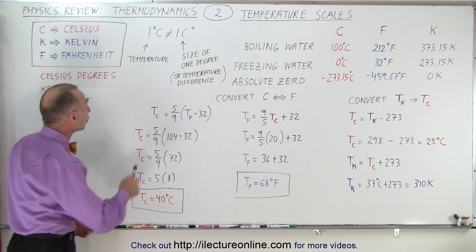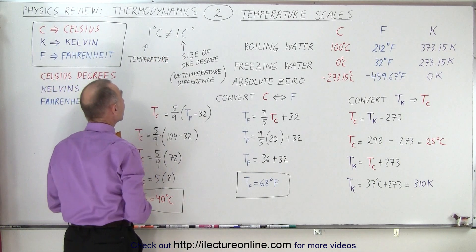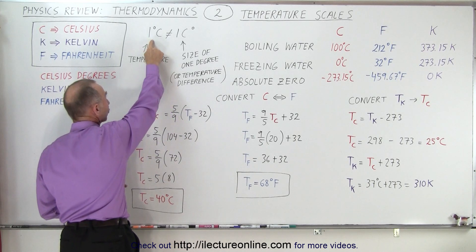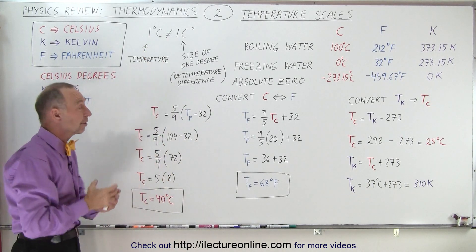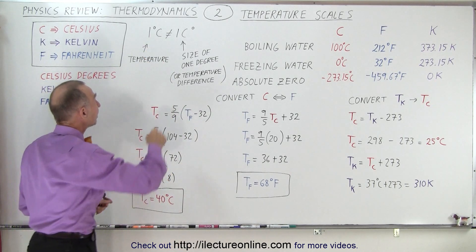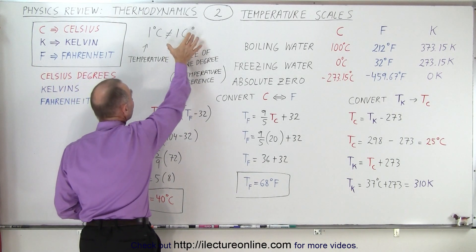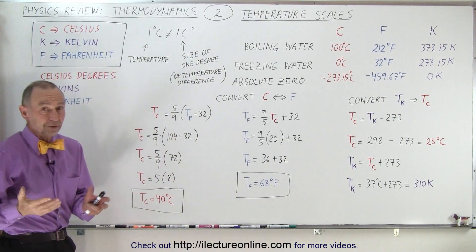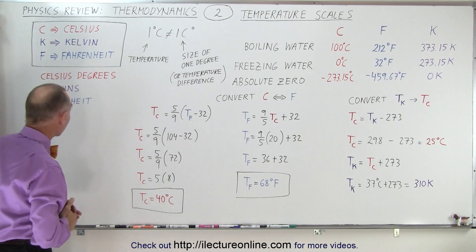Keep in mind that 1 degree Celsius is not the same as 1 Celsius degree. This gives you the actual temperature, which means 1 degree above the freezing point of water, and this gives us the size of the degree, or the difference between two temperatures, between the difference between 28 and 29, for example.